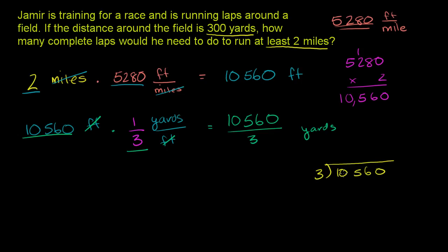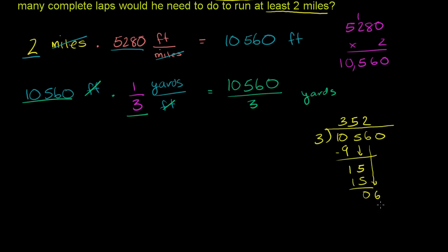So 3 goes into 10,560. It doesn't go into 1. It goes into 10 three times. 3 times 3 is 9, and we subtract. We get 1, bring down this 5, becomes a 15. 3 goes into 15 five times. 5 times 3 is 15. We have no remainder. Bring down the 6. 3 goes into 6 two times. 2 times 3 is 6. Subtract, no remainder. Bring down this last 0. 3 goes into 0, 0 times. And we have no remainder. So this is going to be 2 miles is equivalent to 3,520 yards.